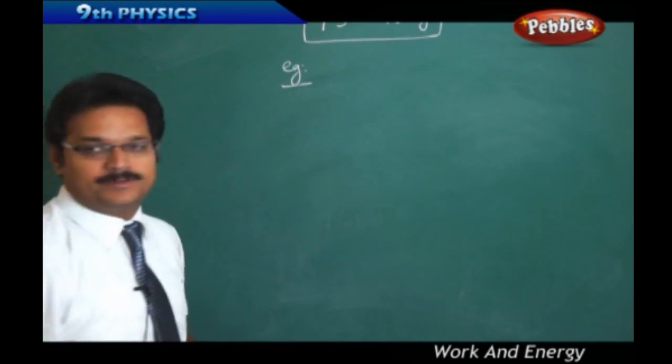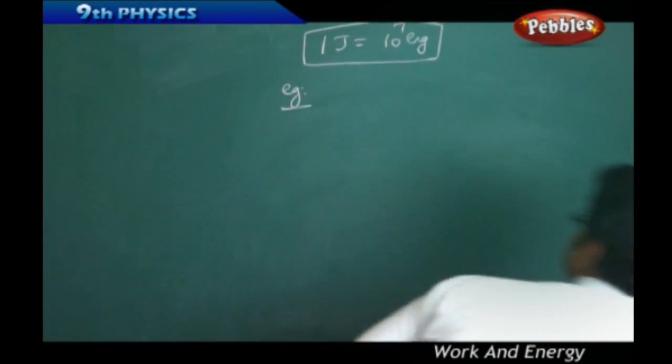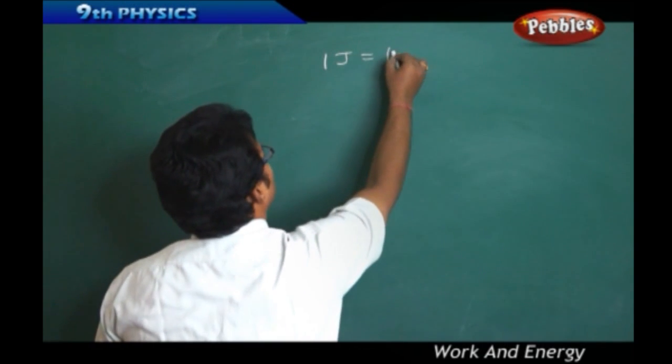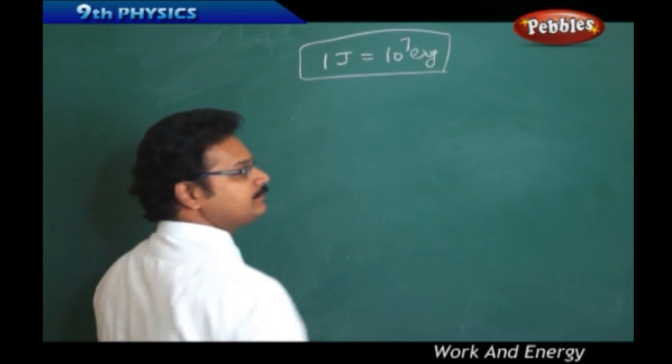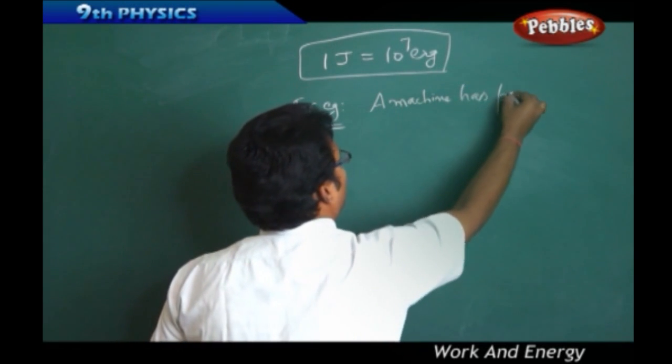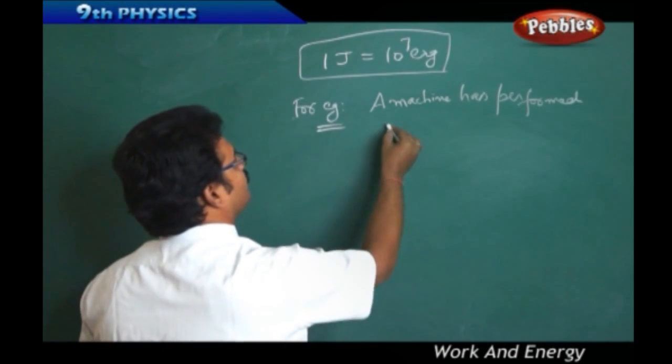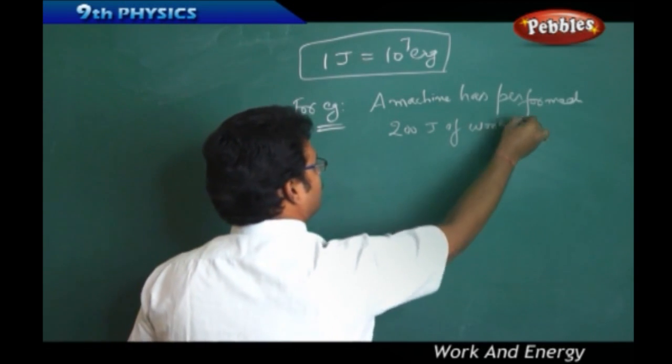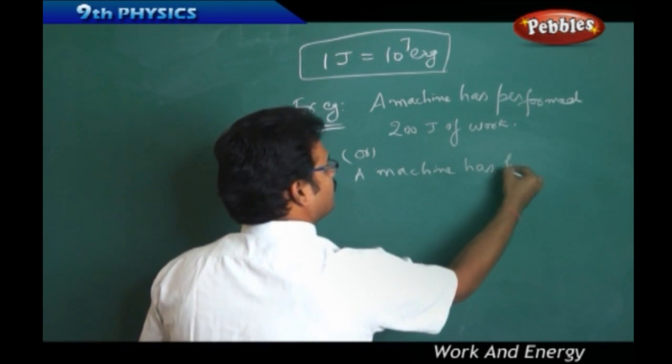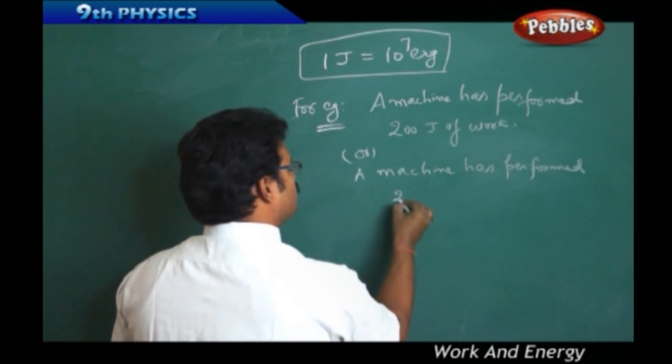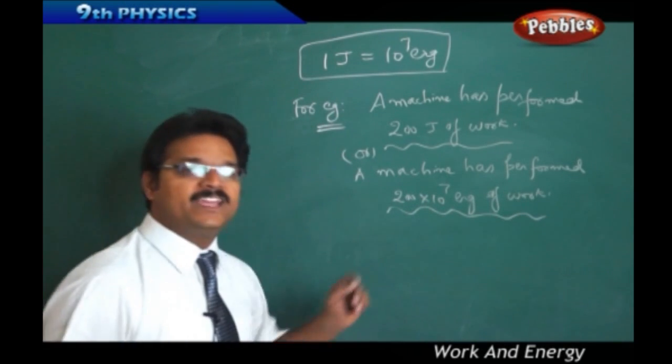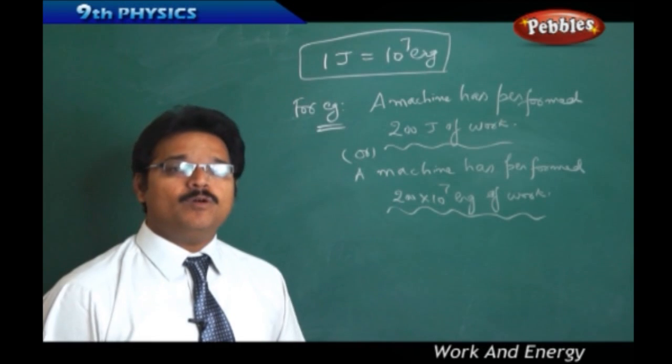For example, a machine has performed 200 Joules of work is equals to, a machine has performed 200 into 10 to the power of 7 Ergs of work. So, here, these two are equal. Then, what are different examples, other examples you can take, we say that this is work in physics. See these examples.